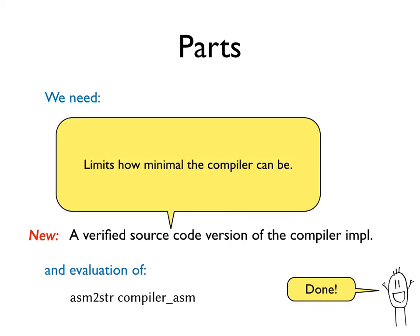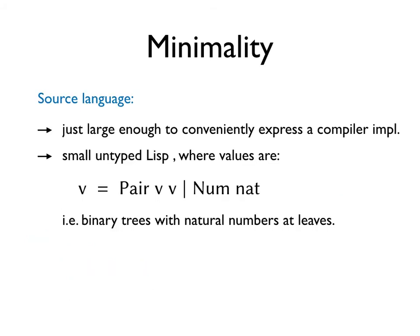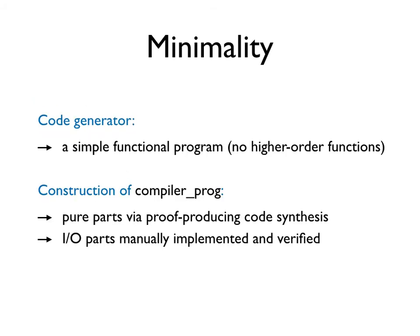The last item on the list limits how minimal the compiler can be. With the name of minimality, the source language was designed to be just large enough to conveniently express the compiler implementation. I decided on a small untyped Lisp where values are binary trees with natural numbers at the leaves. The code generator is then a simple functional program. And compiler-prog was produced mostly using proof-producing code synthesis. The IO parts were manually implemented and verified.